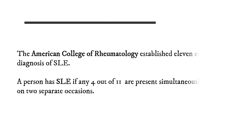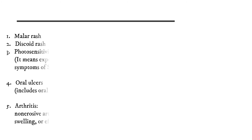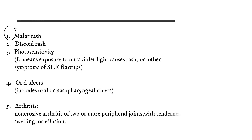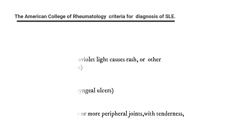The American College of Rheumatology established 11 criteria for diagnosis of SLE. A person has SLE if any 4 out of 11 are present simultaneously or serially on two separate occasions. The criteria include malar rash, discoid rash, photosensitivity, non-erosive arthritis of two or more peripheral joints with tenderness, swelling, or effusion.